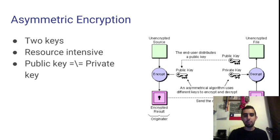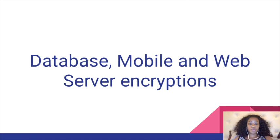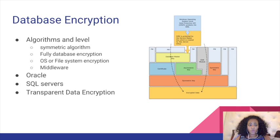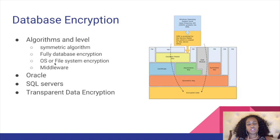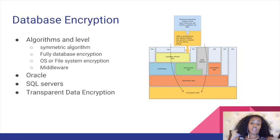I want to pass it on to Maria, who is going to discuss database, mobile, and web encryptions. For databases, there are algorithms and levels: symmetric algorithms, fully database encryption, OS, and file system encryption. Fully database encryption is not recommended simply because it lacks access control, has performance impact, and limited key management. OS or file system encryption is in the same boat for the same reason. What is really recommended is middleware, which does have access control, limited performance impact, and clear text communications of what should be encrypted.